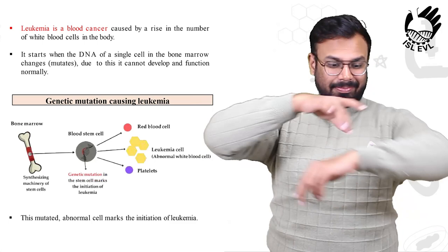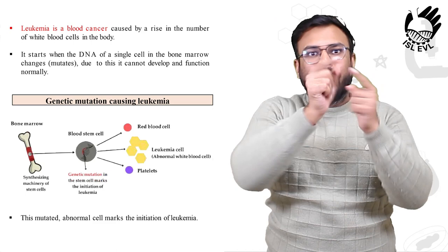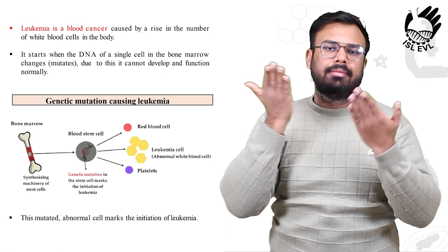Genetic mutation causing leukemia: In the stem cell marks the initiation of leukemia. This mutated abnormal white blood cell marks the initiation of leukemia.